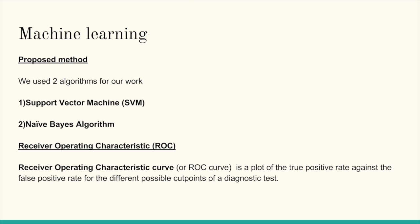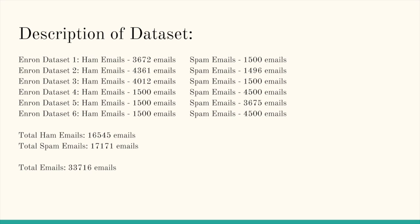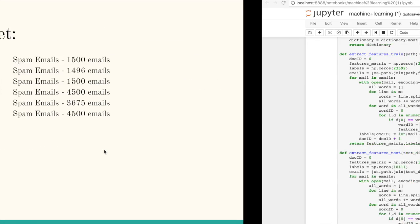Now I'll be talking about the description of the dataset. We have six folders of the Enron dataset, and each folder contains ham and spam emails. In Enron dataset one, we have 3,672 emails as ham emails and 1,500 emails as spam emails. Altogether, we have 16,545 emails as ham emails and 17,171 as spam emails. We have split the dataset into 70/30.